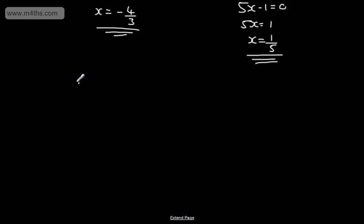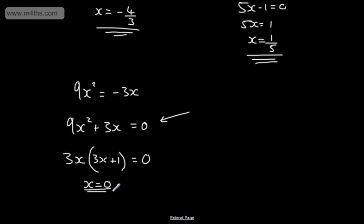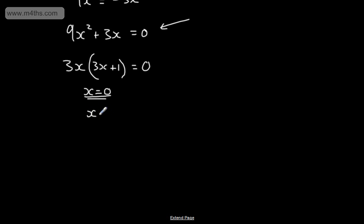Let's try 9x squared is equal to minus 3x. I want the right-hand side to be equal to 0, so I add 3x to both sides, giving 9x squared plus 3x is equal to 0. The highest common factor this time is 3x, so factoring gives 3x times 3x plus 1 is equal to 0. Either 3x is equal to 0, meaning x is equal to 0, or 3x plus 1 is equal to 0, meaning x is equal to minus 1 third.